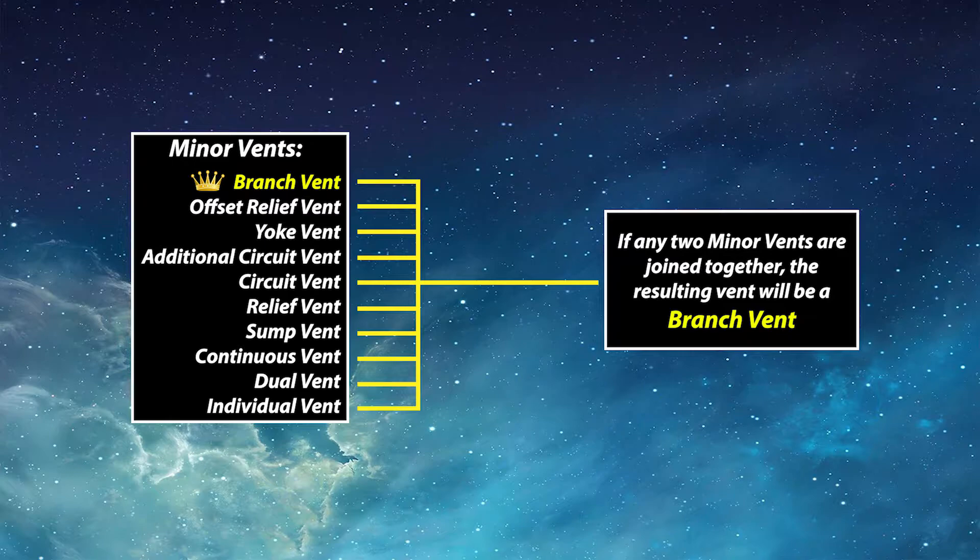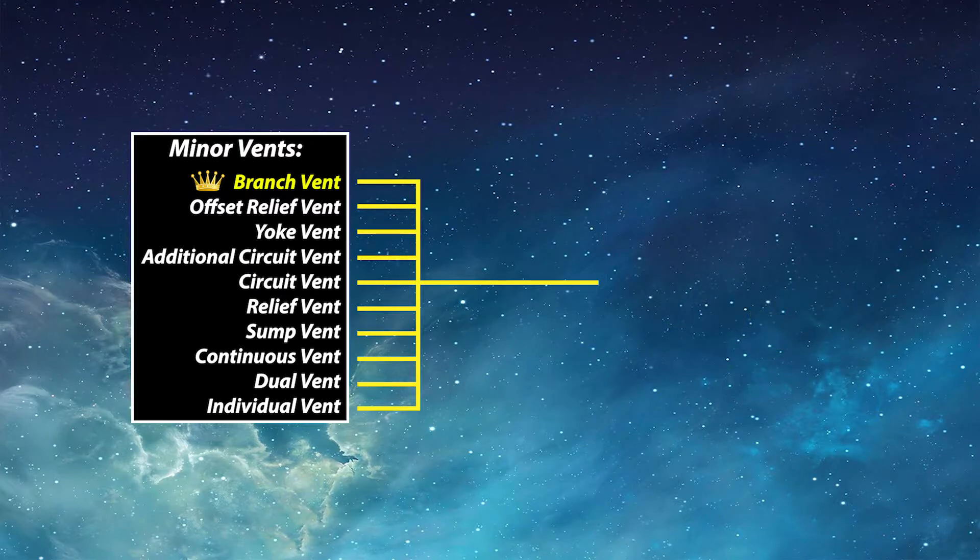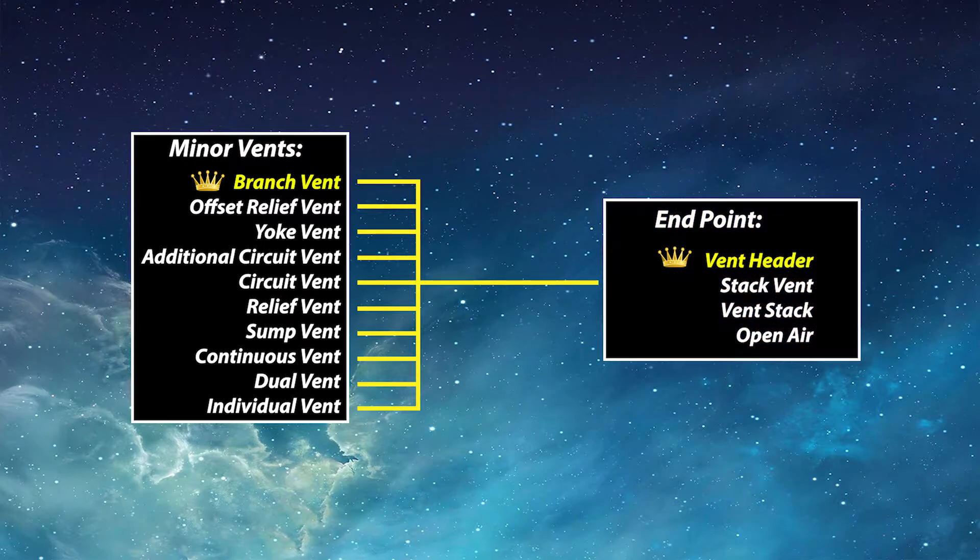So not only did that definition tell us where the branch vent begins, it tells us where it ends or the upper portion. A branch vent will end whenever it connects into a stack vent, vent stack, vent header, or open air.